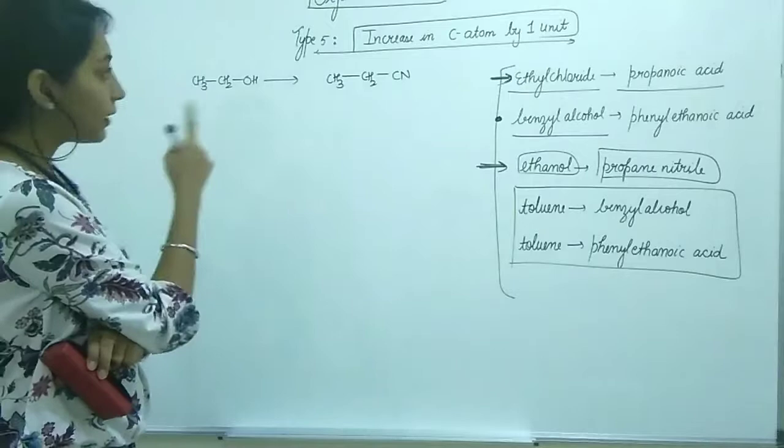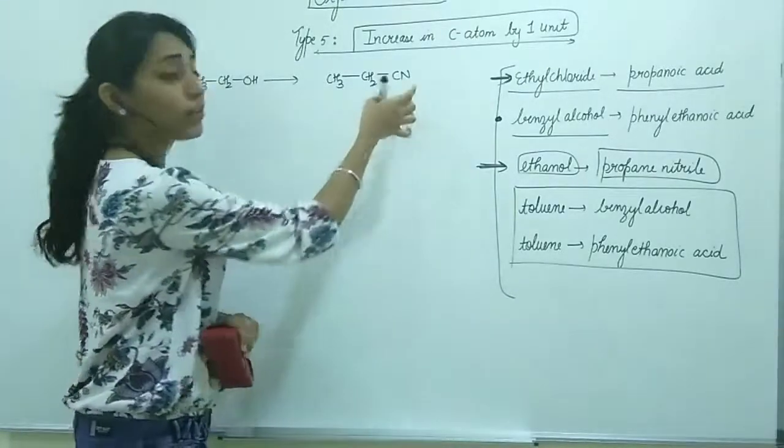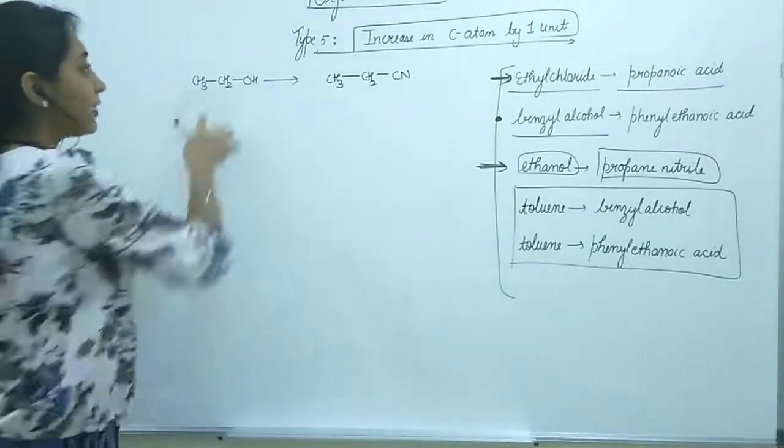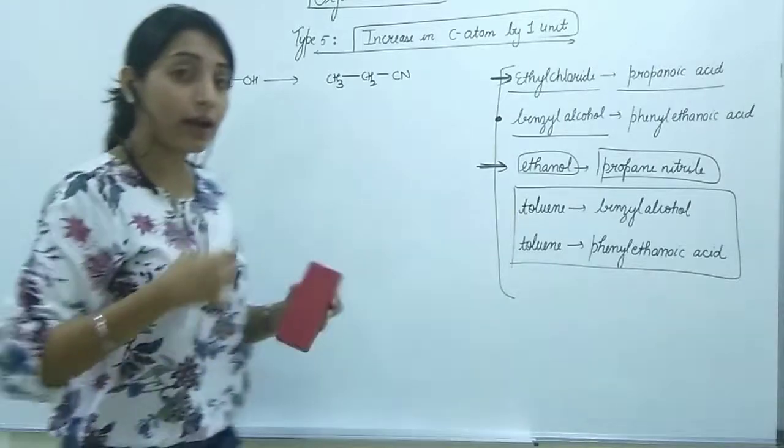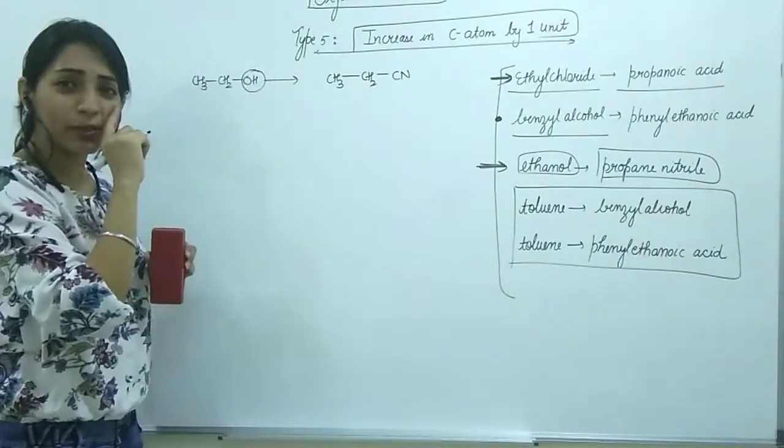Nomenclature has to be clear before you do the preparation. Think - is there an increase of one carbon atom? Yes, one-two becomes one-two-three. Now what to do? The process remains the same - increase the carbon atom. How can we increase carbon with OH present?